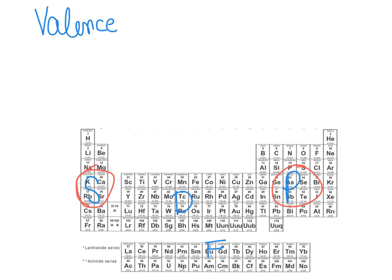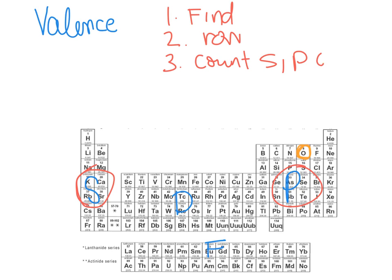When looking for your valence electrons — for instance, if we're using oxygen — you are going to look at just the row that the element is in. First, find your element. Second, identify just its row. Third, count the S's and the P's only, including your element. So if we're looking at oxygen, we count: one, two, three, four, five, six. So oxygen would have six valence electrons.